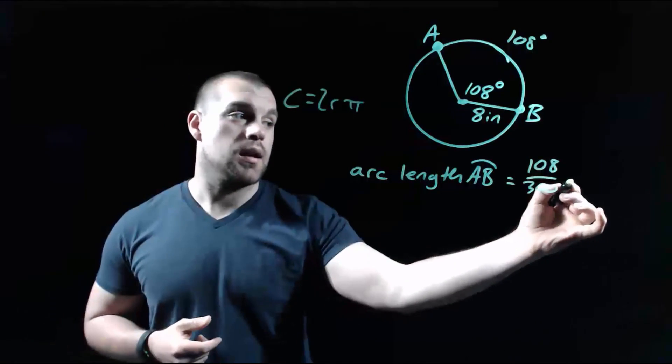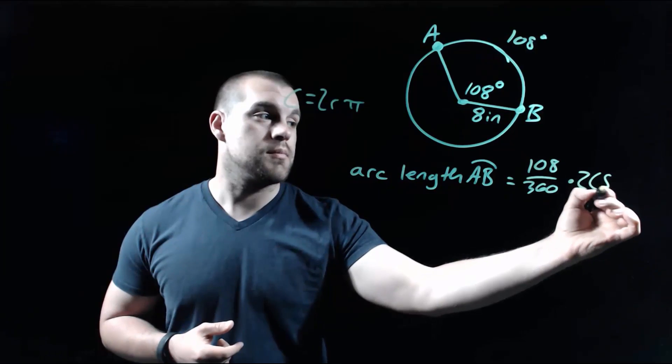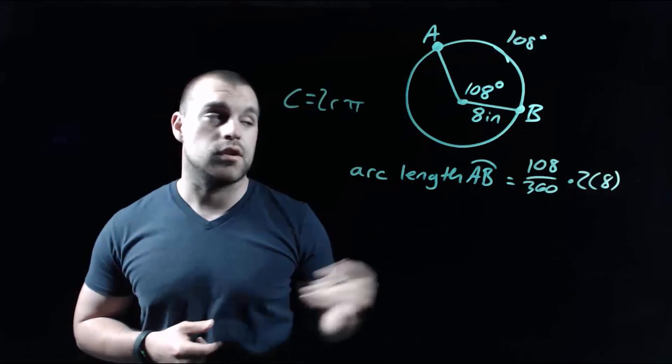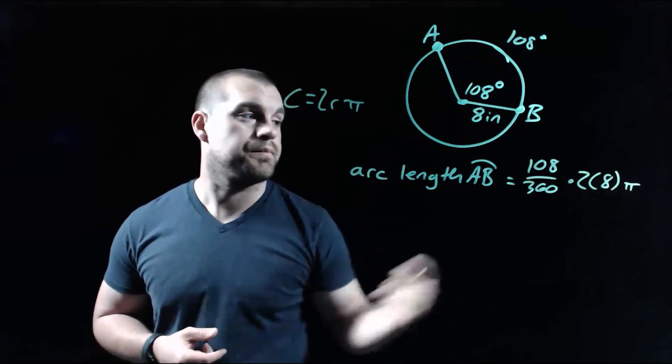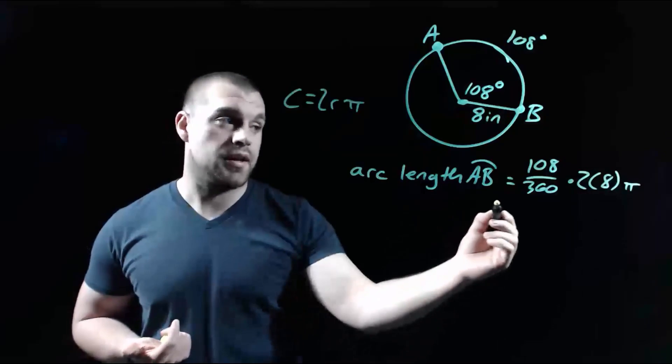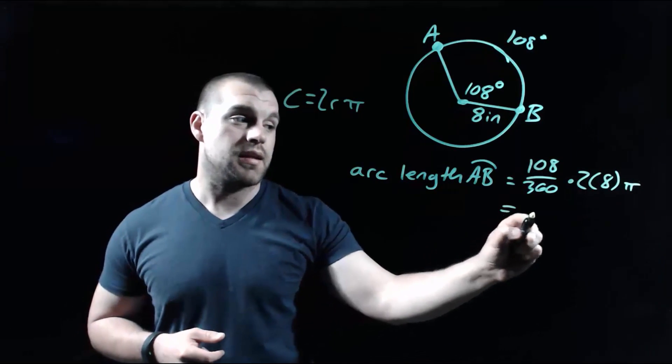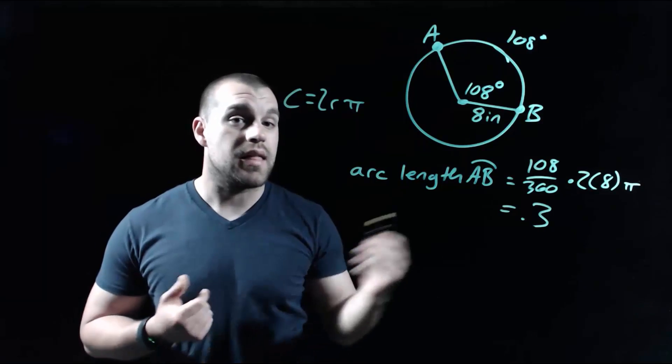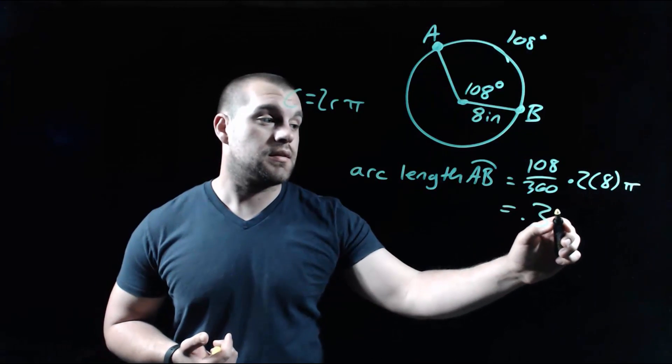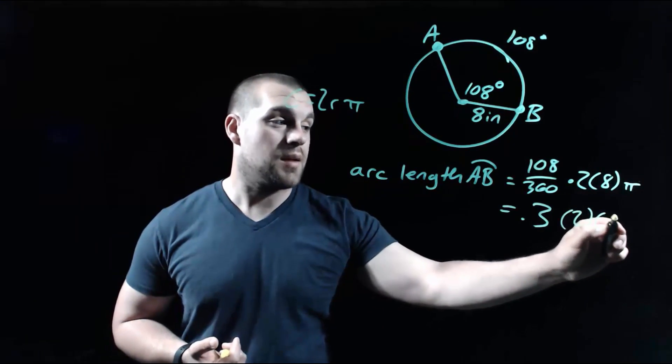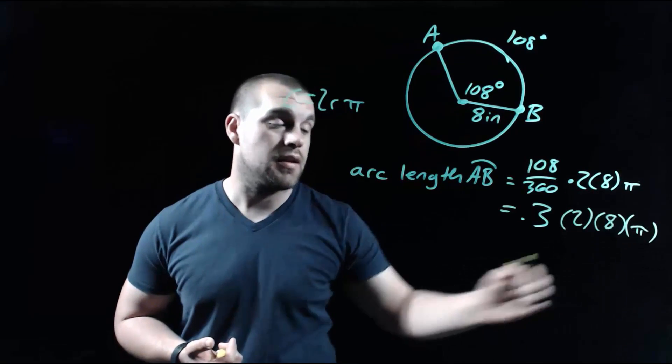So what I'm going to fill in on the back end here is 2 times the 8, because that's the radius of our circle, times pi. Now if we start simplifying some things down, if we take 108 divided by 360, that decimal is 0.3. And then we're going to take that decimal times our 2 times the 8 and times the pi that's on the end.